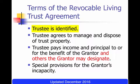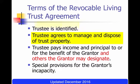For example, if you become incapable, you'd have a standby trustee to act in your place. The agreement includes the trustee's promise to manage and take care of the property in the trust, and to dispose of the trust property according to the instructions in the agreement.